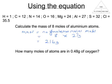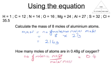In the second question, it's the number of moles we need. So number of moles equals mass over molar mass. Here, the mass is 0.48 grams, and the molar mass for oxygen is 16 grams. So 0.48 divided by 16 on the calculator gives 0.03 moles.